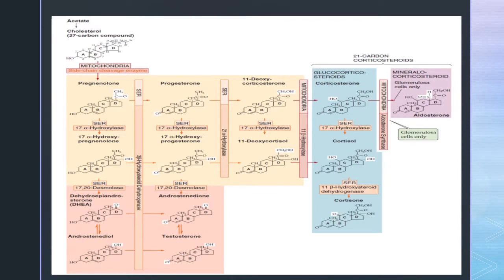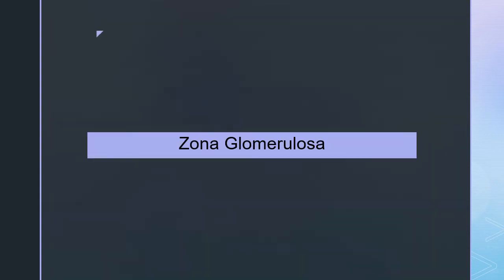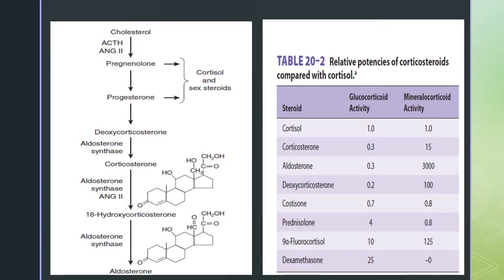Aldosterone synthesis and secretion is regulated mainly by three important stimuli: ACTH, angiotensin-2, and plasma potassium concentration. As with many naturally occurring substances, the activity of adrenocortical steroids can be increased by altering their structure. Several synthetic steroids are available, and the relative glucocorticoid and mineralocorticoid potencies of natural and synthetic steroids can be compared.